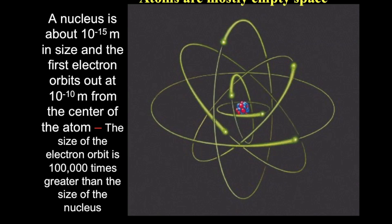Atoms are extremely tiny. The nucleus of an atom is about 10 to the minus 15 meters in size. That's a thousandth of a trillionth of a meter. And then the first orbit of an electron is 10 to the minus 10 meters from the center of an atom. That is a ten billionth of a meter from the center of the atom.